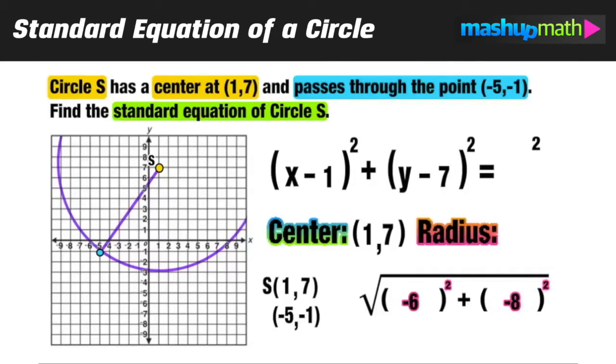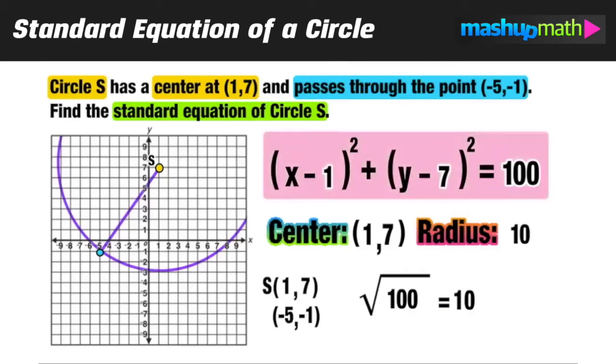I can square all of those values: negative 6 squared equals 36 plus negative 8 squared equals 64. 36 plus 64 equals 100 and finally the square root of 100 equals 10. That is our radius which we can put right into the formula. And 10 squared just equals 100 and now we have our standard equation of circle S.